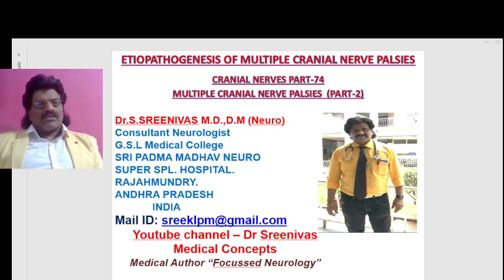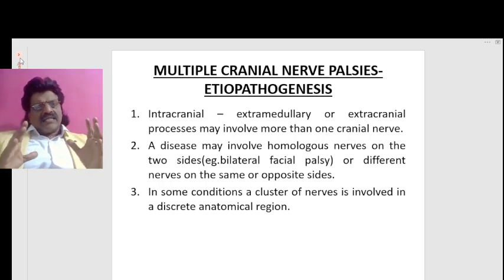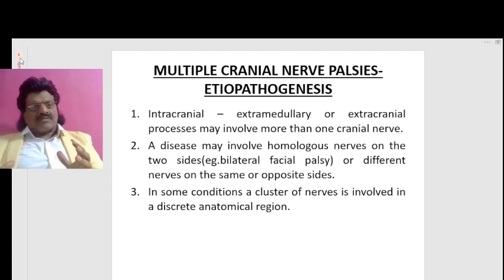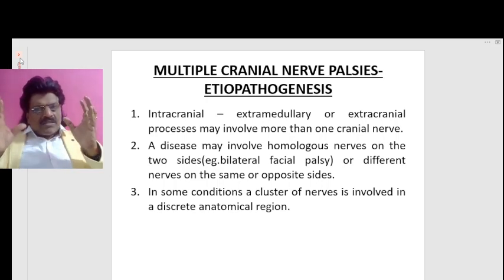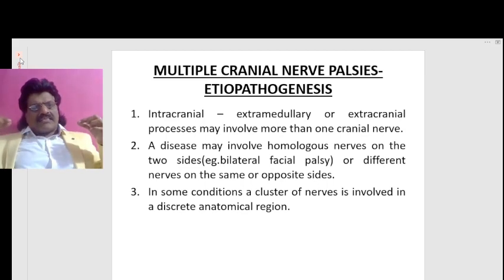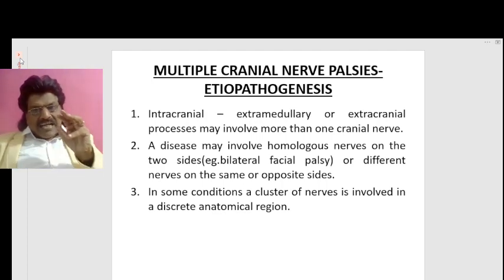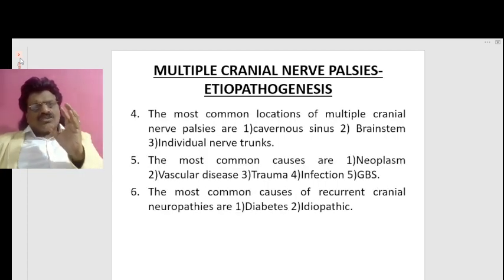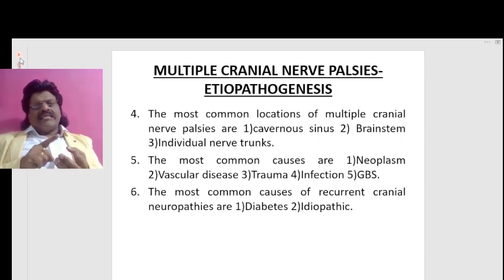The etiopathogenesis of multiple cranial nerve palsies — cranial nerves part 74. Intracranial extradural or extracranial processes may involve more than one cranial nerve. A disease may involve homologous nerves on both sides, for example bilateral facial palsy, or different nerves on the same or opposite sides. The most common locations of multiple cranial nerve palsies are the cavernous sinus, brainstem, and individual nerve trunks.